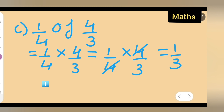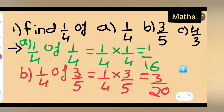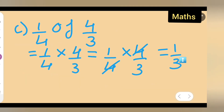So one upon three is the answer for c). To summarize: the first answer is one upon sixteen, the next is three upon twenty, and the last one is one upon three. I hope you all have understood — have a great day!